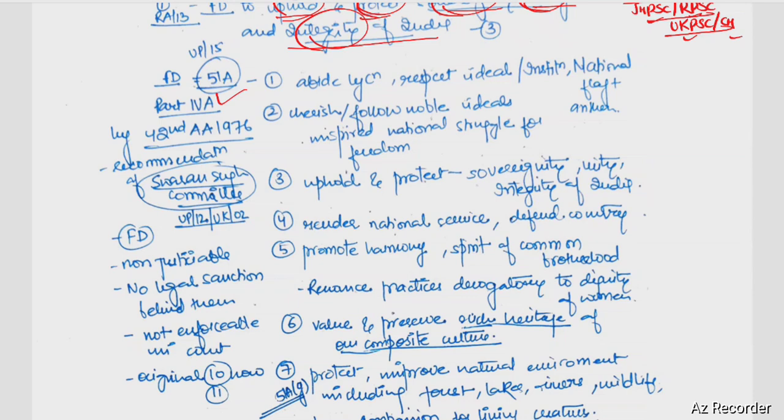This is in article 51A. This is also asked in your question. Which part is? Part 4A. When was it added? The 42nd Amendment Act 1976. The committee of Swaran Singh was put on recommendations. The fundamental duties was first 10. After that, you have added one other fundamental duties. The total will be 11 fundamental duties.